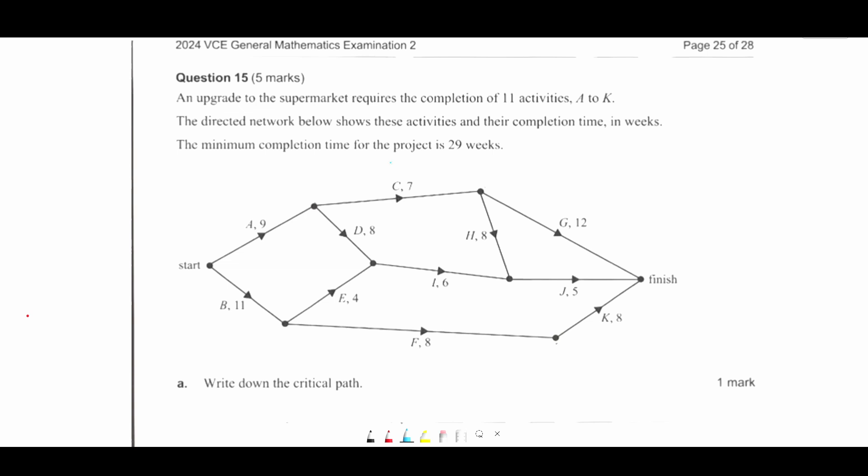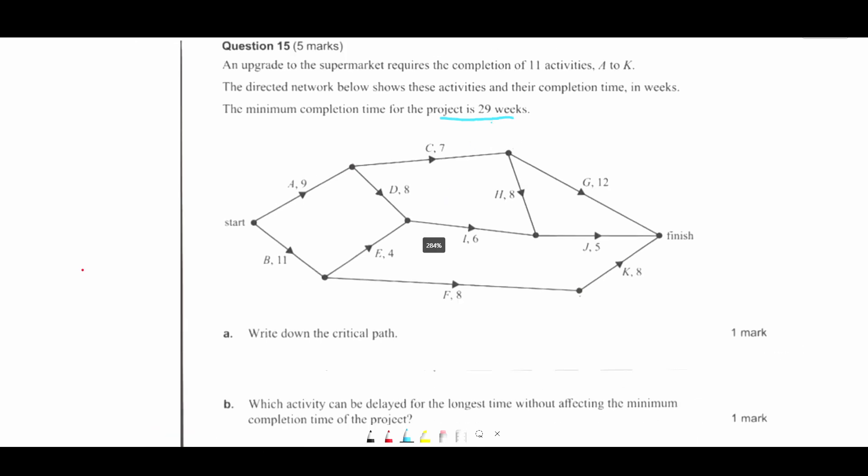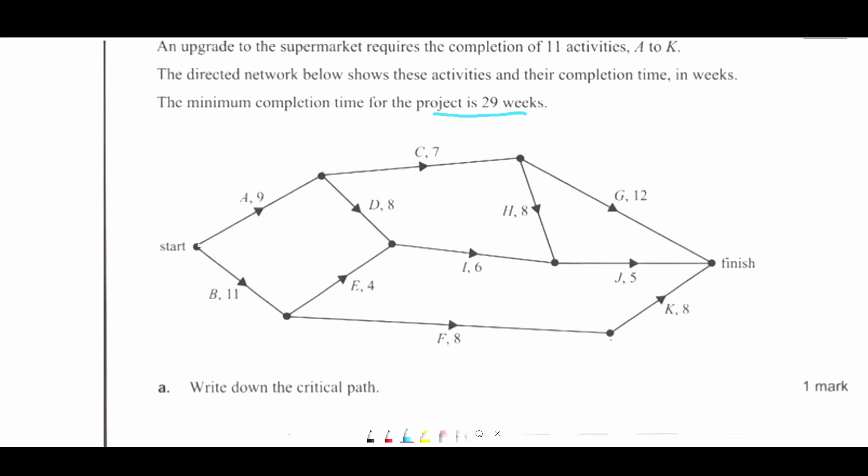The minimum completion time for the project is 29 weeks. Write down the critical path. So we know that whatever path we get, it has to add up to 29. So let's go ahead and do it. I'll use red. This is 9. This is 17.